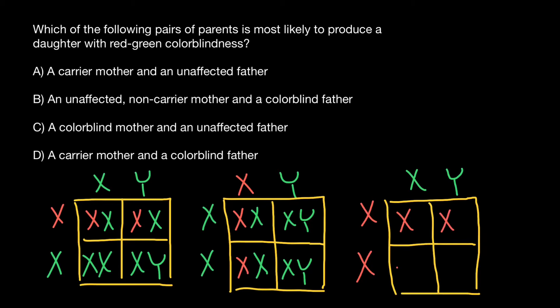The defective X chromosome would be inherited by all progeny. As you can see, this couple is going to have affected sons, but again none of the daughters are going to be affected — they are going to be carriers, 100% of them.